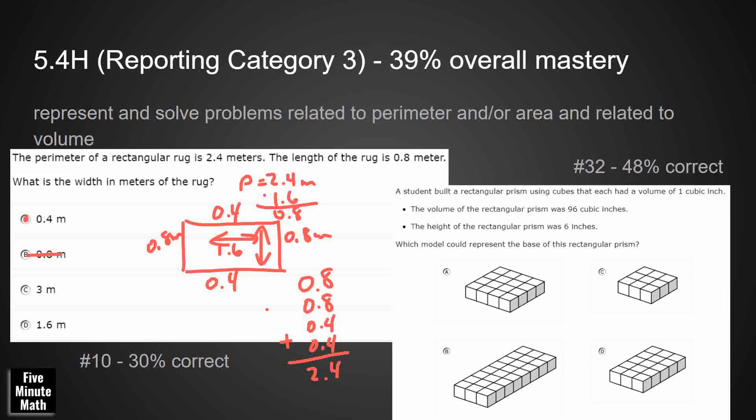We did a little bit better on number 32. We had a rectangular prism that we kind of had to visualize here. Now, we did have volume equals base times height. That was a formula that students could have used on the reference chart. And so our volume was 96. So I'm just going to substitute in 96. I don't know what my base is, but I know my height is 6. So something times 6 makes 96. Hopefully students knew that we could use division there to find the missing factor. And that's going to give me 16. And then I've got to count. And the only one that equals 16 is going to be A.